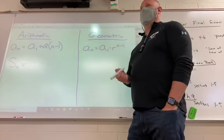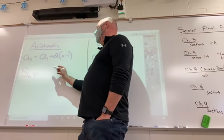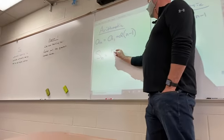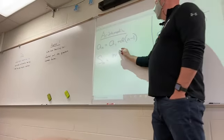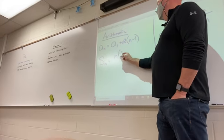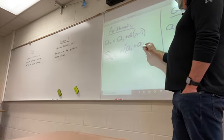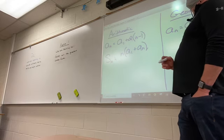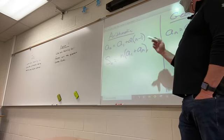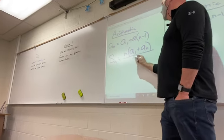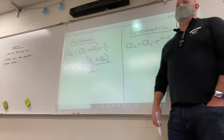There was two formulas for that. The first one was quite simple. It was the number of terms times the first term plus the last term. So you just add the first term and the last term together, times it by the number of terms, and divide it by two.